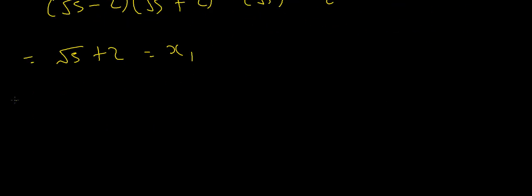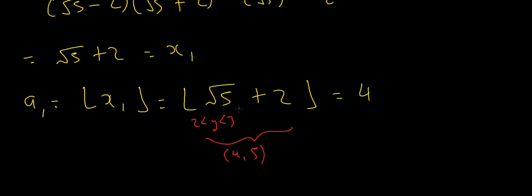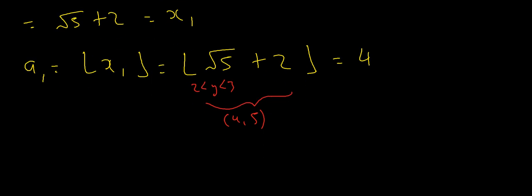Now I need to find a₁. a₁ is equal to the floor of x₁, which is the floor of root 5 plus 2. Root 5 is between 2 and 3, so if I add 2 to all sides of that inequality, that tells me that root 5 plus 2 is between 4 and 5. This is a good strategy to use if you want to estimate values without a calculator. So that whole number is in the interval from 4 to 5, which means the floor of root 5 plus 2 has got to be 4. Another way of thinking about it: root 5 is about 2.2, so root 5 plus 2 is about 4.2, and the floor is 4.